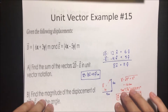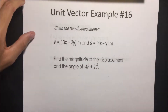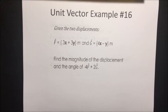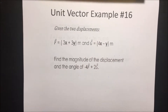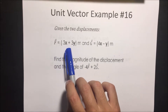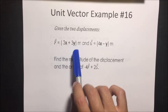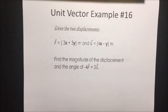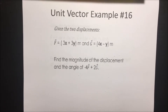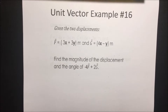Next example — a similar problem to get used to this. Given the two displacements: F = 3x̂ + 3ŷ meters, and G = 4x̂ − ŷ meters. Find the magnitude of the displacement and the angle of −4F + 2G.